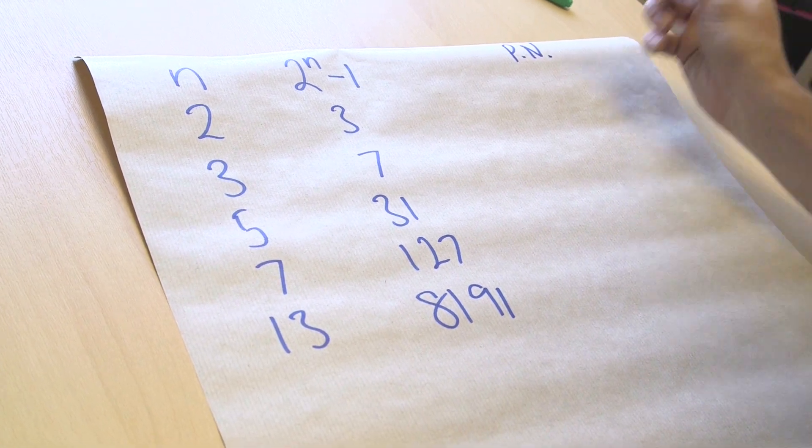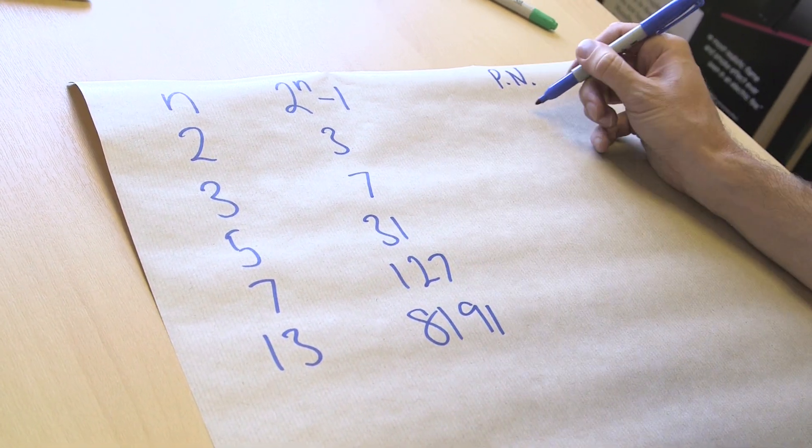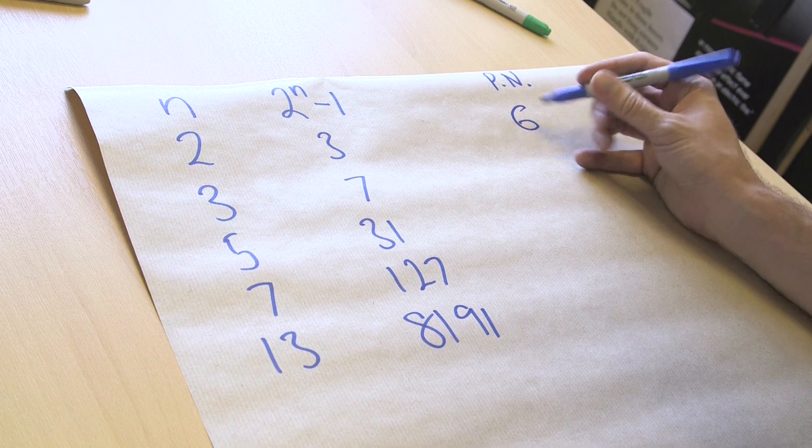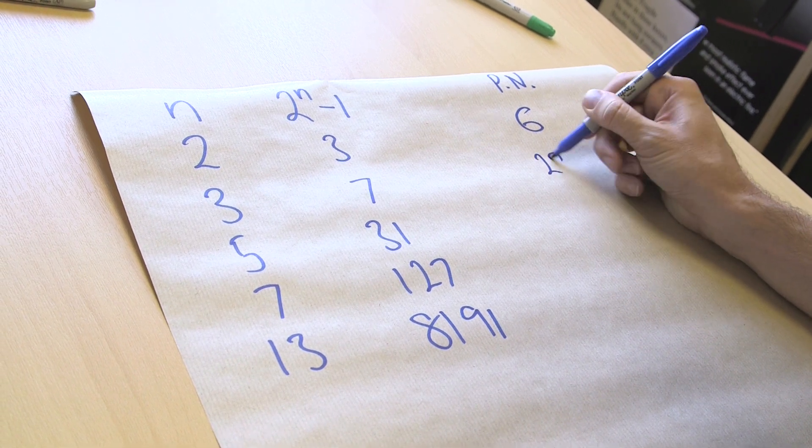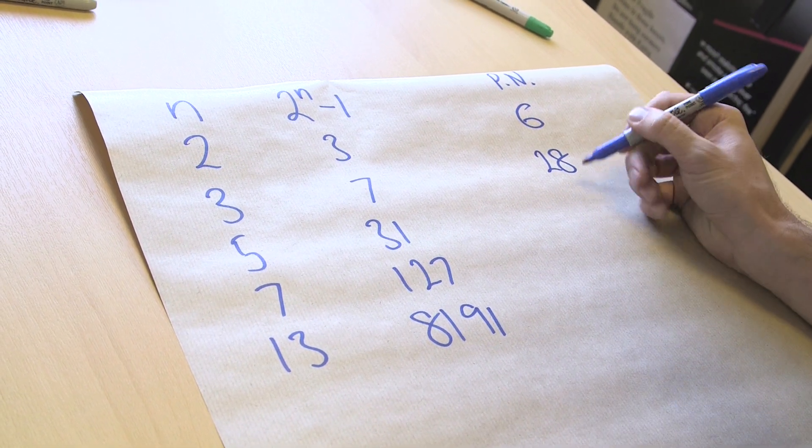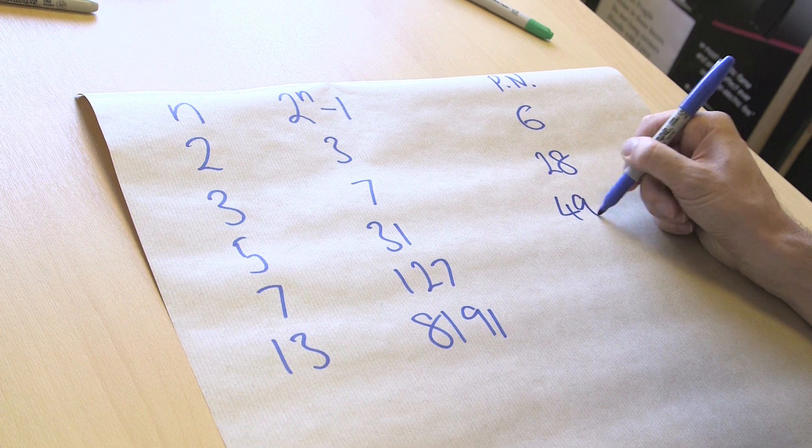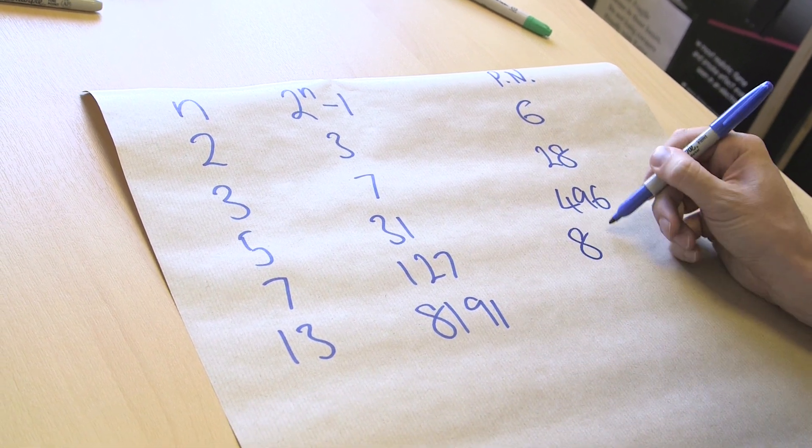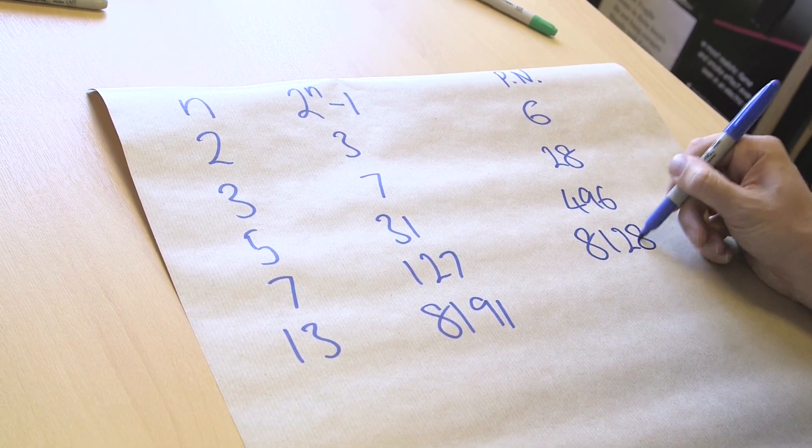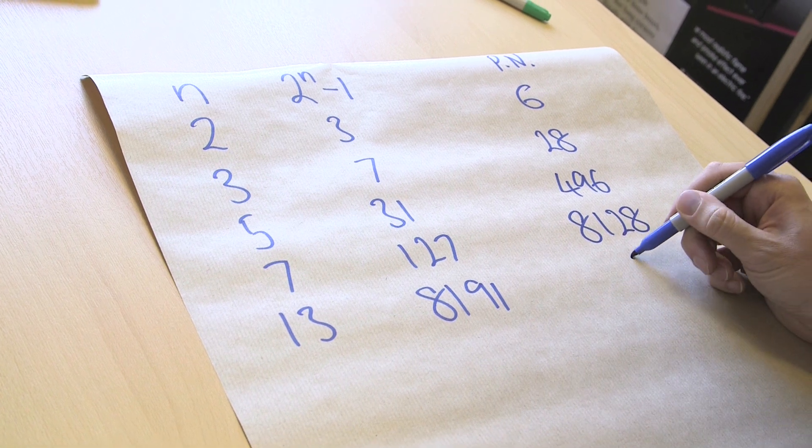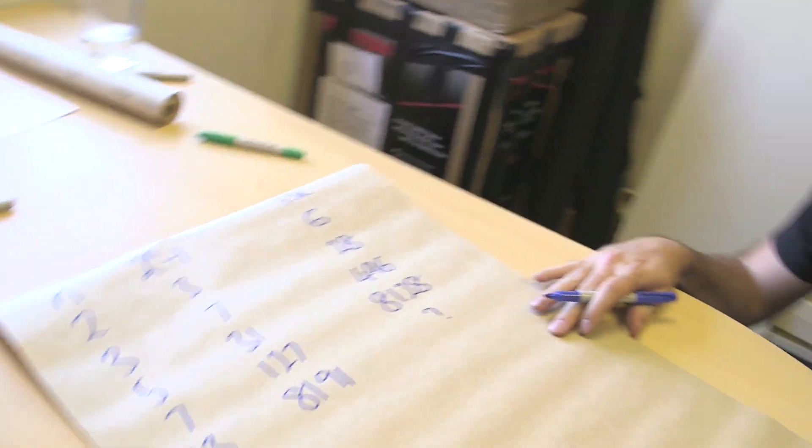And then they match up with some perfect numbers, which I'm going to put over here as perfect number. And so 3 matches up with 6, 7 matches up with 28, 31 matches up with 496, 127 matches up with 8,128, and then this one matches up with something. We'll get to that in a second.